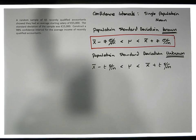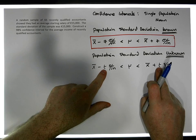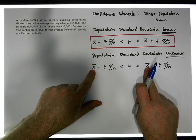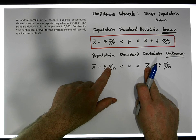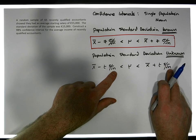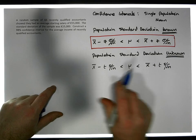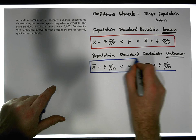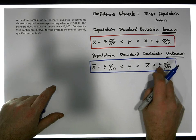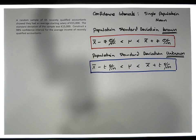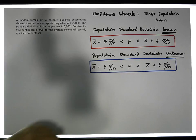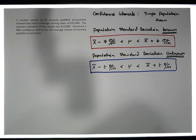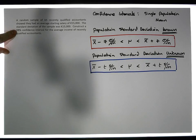The only thing that changes is the t-value. We know x-bar is the sample mean, we know the sample standard deviation, and we know the sample size. The t-value is what changes, dependent on the size of the confidence interval we want to construct. So it's actually straightforward to do. Let's have a look at this particular scenario — it's the same scenario as before, but the only thing changing is that it's a 98% confidence interval.